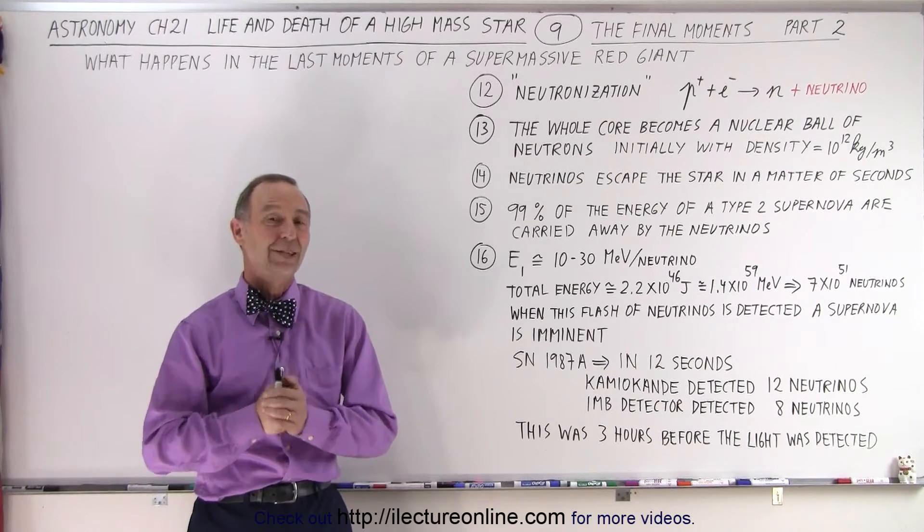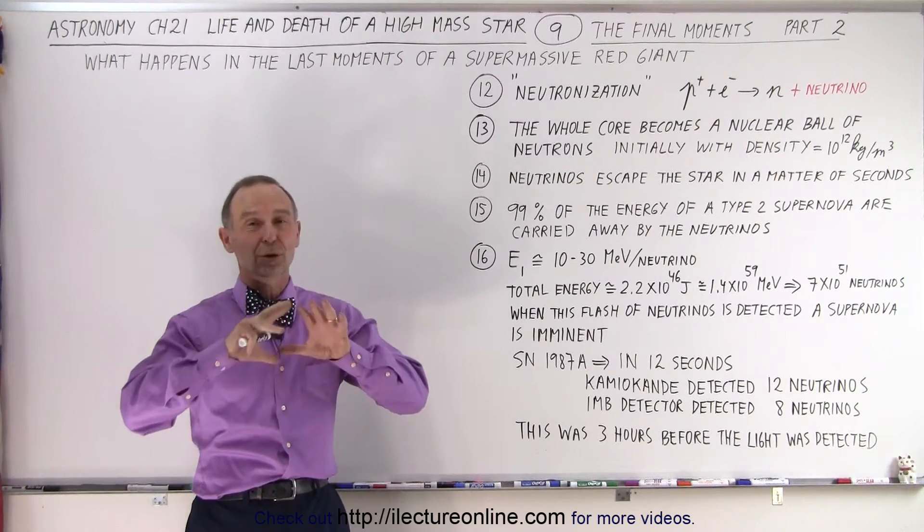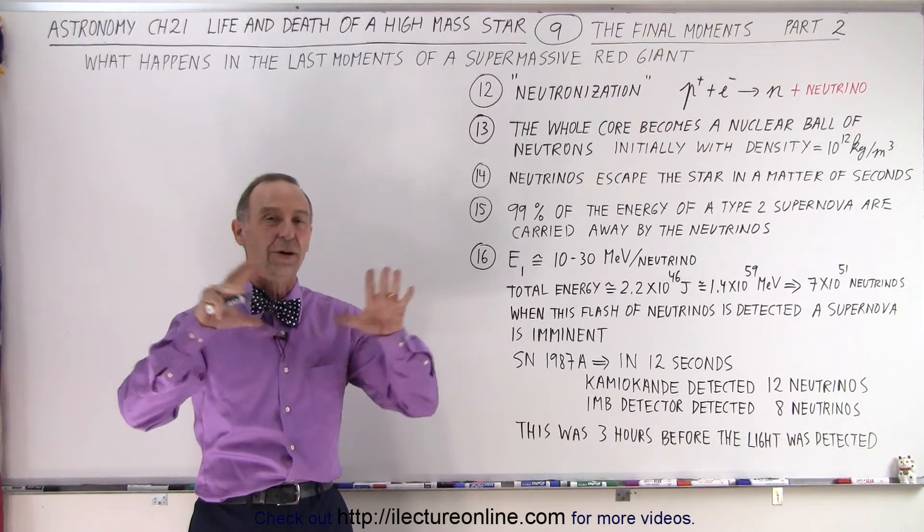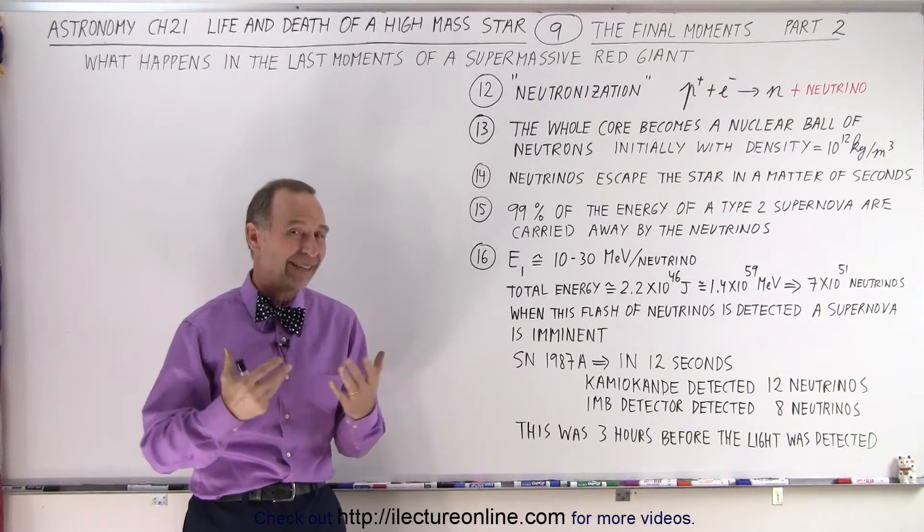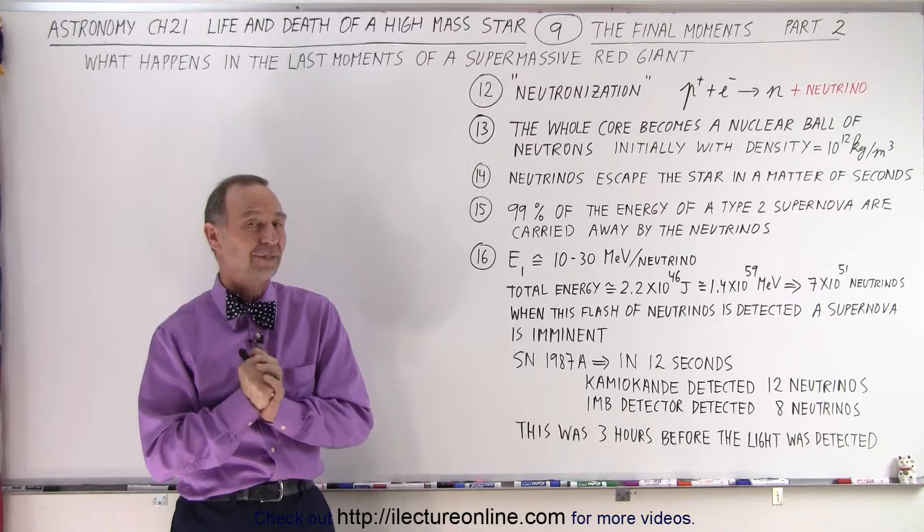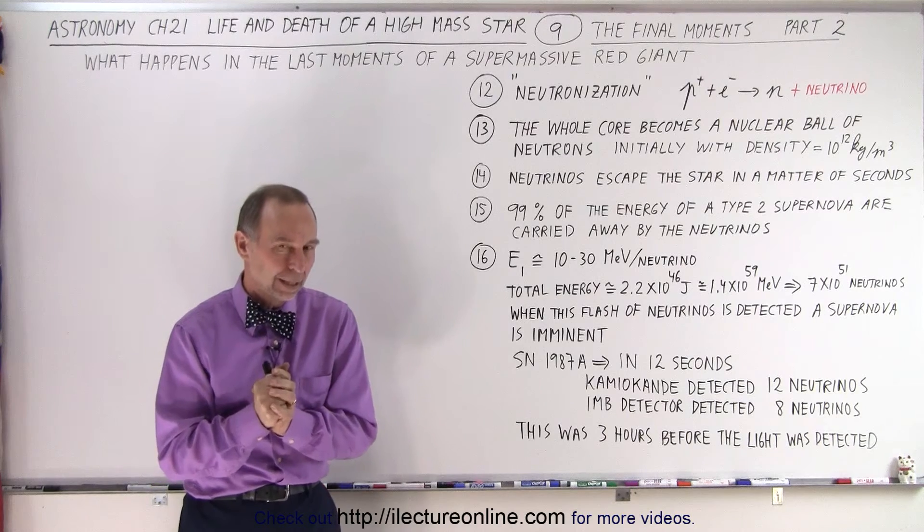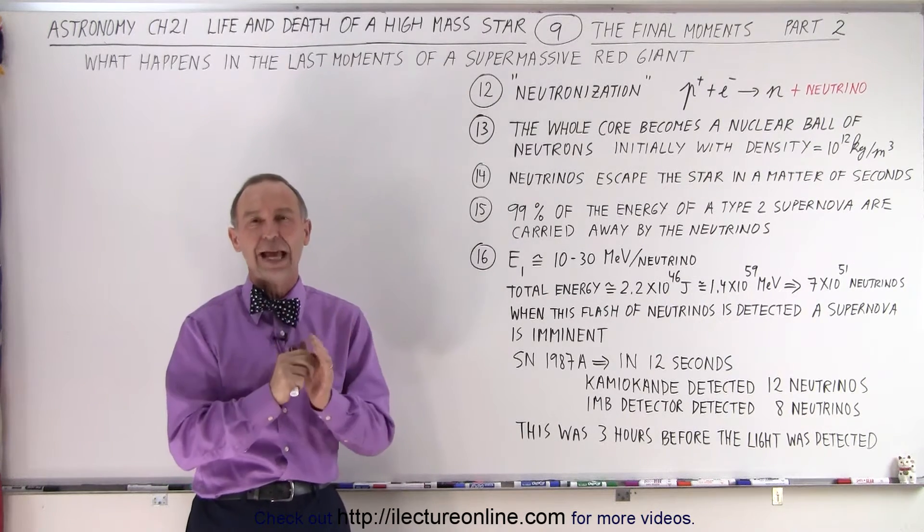Welcome to our Lecturer Online. In the previous video we left off where the nuclear core of the star had collapsed into a nuclear ball with a density of about 2 times 10 to the 17 kilograms per cubic meter. But we should mention a few more steps before that.